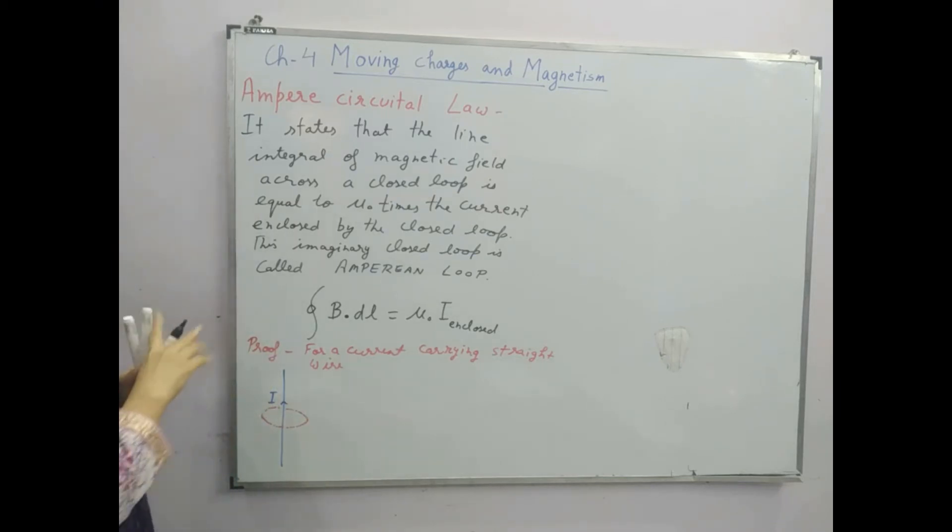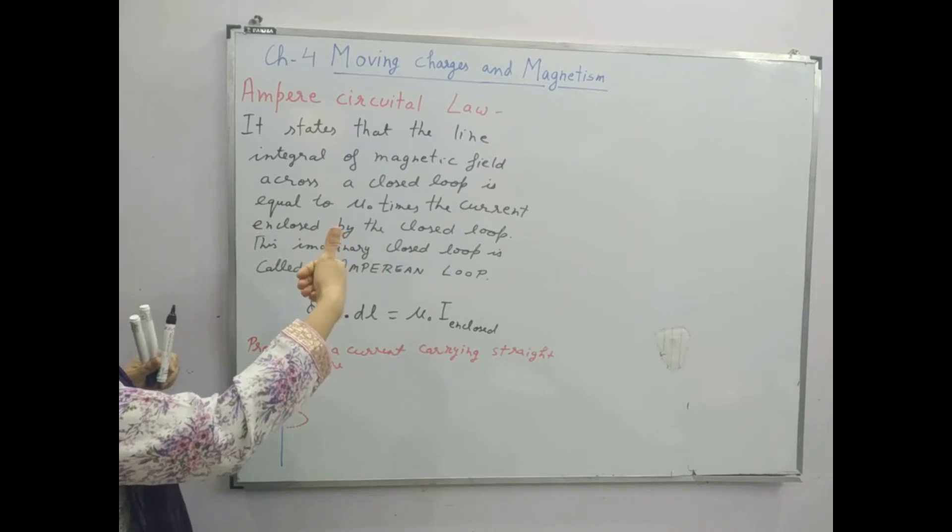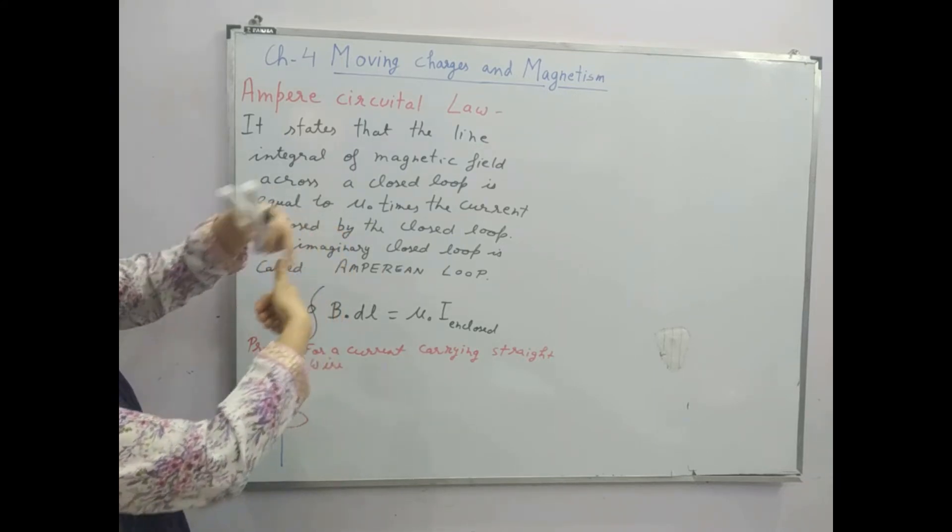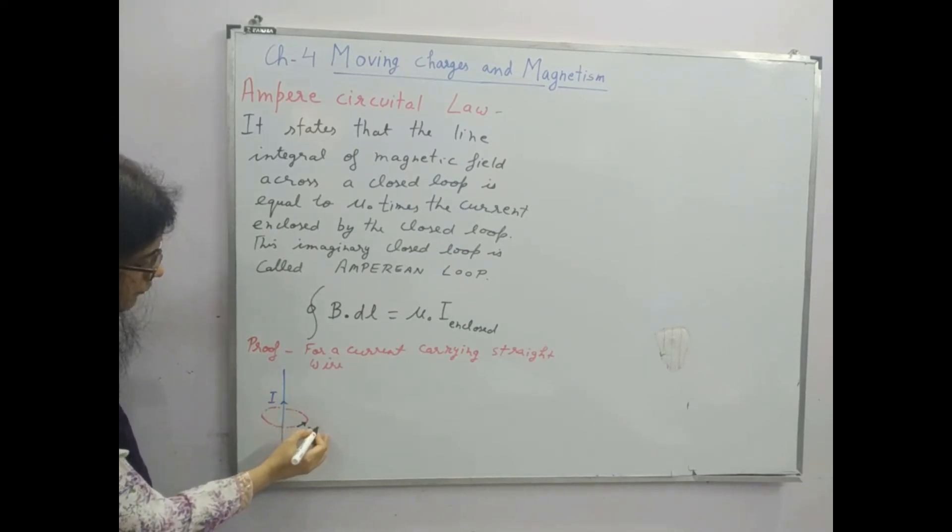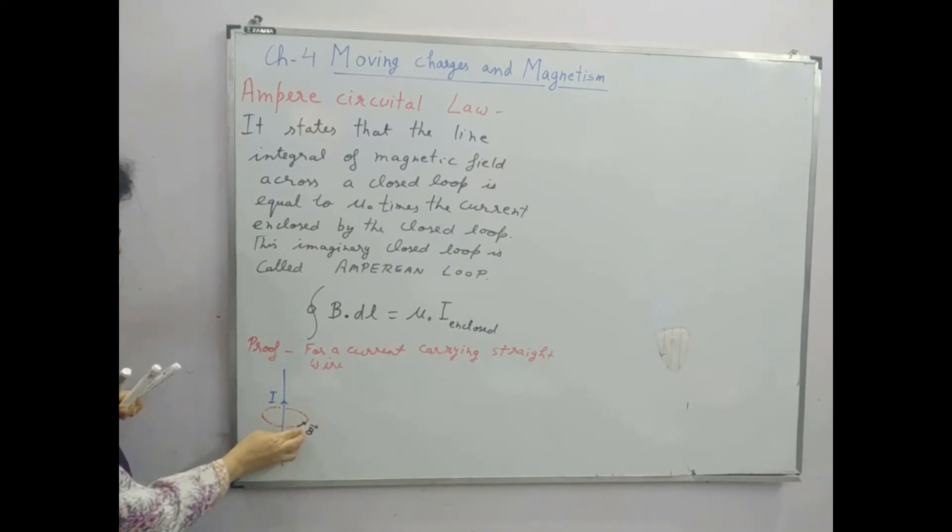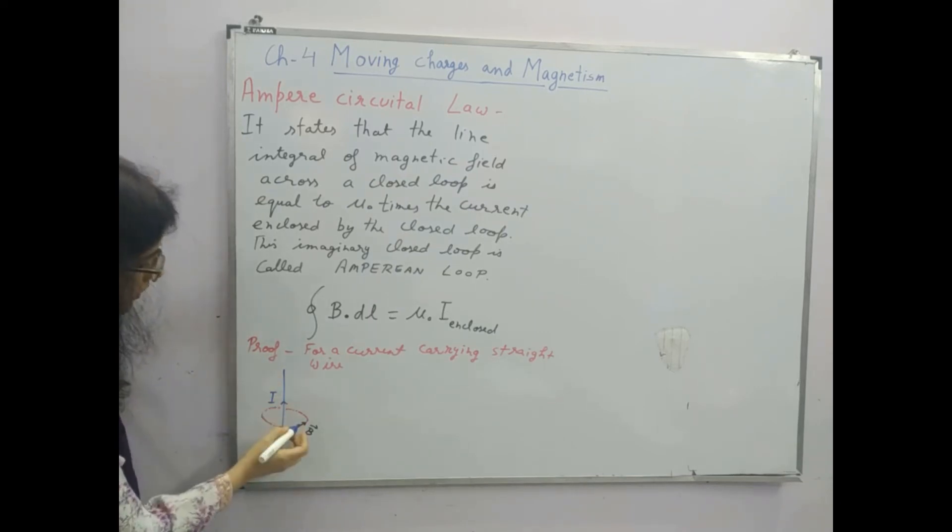Now we know by right hand thumb rule that the magnetic field lines are in the form of these closed circles around this current carrying wire. So if I want to mark the magnetic field, this will be this way only, and an element of the closed loop, that is Amperean Loop. So suppose this also I am taking at the same place dl. So dl vector is also having the same direction.